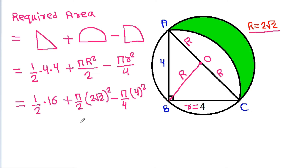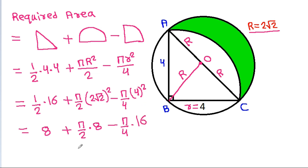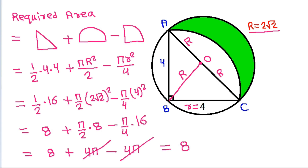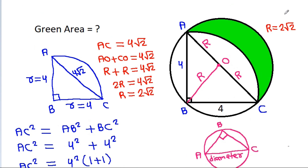So it equals one half times 16, plus π by 2 times (2√2) squared, minus π by 4 times 4 squared. That gives 8 plus π by 2 times 8, minus π by 4 times 16, which is 8 plus 4π minus 4π. The 4π cancels, and the required green area is 8.